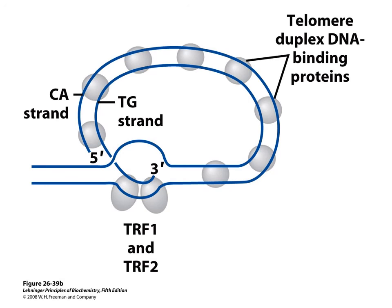The ends of linear DNA are not left freely hanging, as this would make them substrates for nucleases. Instead, the ends are bound by telomere duplex DNA-binding proteins. The TG strand is regenerated by telomerase while the complementary CA strand is synthesized by DNA polymerase. The single-stranded TG overhang folds back and is stabilized by telomere repeat binding factors TRF1 and TRF2, forming the protective end structure of eukaryotic linear chromosomes.